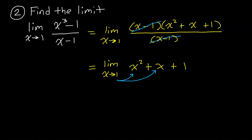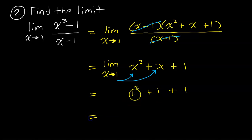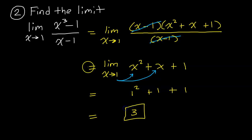Since this function no longer has a denominator, we can now use direct substitution. Substituting 1 gives us 1 squared plus 1 plus 1. Notice that once we do the substitution, we no longer write the limit. This is the limit; we just simplify. And 1 plus 1 plus 1 equals 3. So the limit of this function as x approaches 1 is 3.